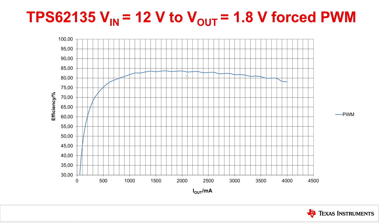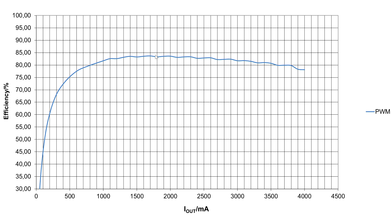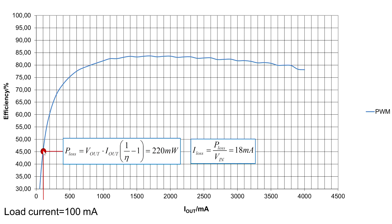Now let's have a look at the efficiency curve of the TPS62135 operating from 12V input to 1.8V output and the device is in forced PWM operation. And as we reduce the load current, you can see the efficiency rolls off and at the load current of 100 milliamps, the efficiency drops down to 45%. This translates into a power loss of 220 milliwatts, which gives us a conversion loss current of 18 milliamps.